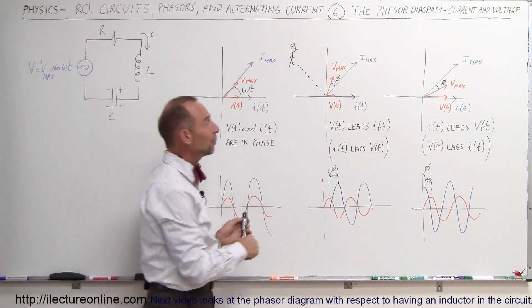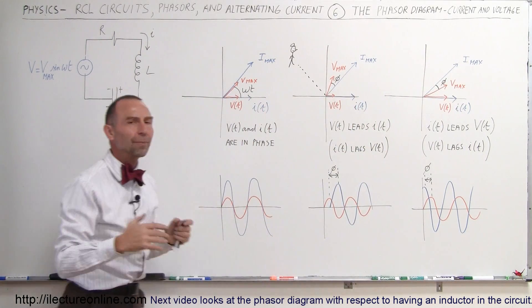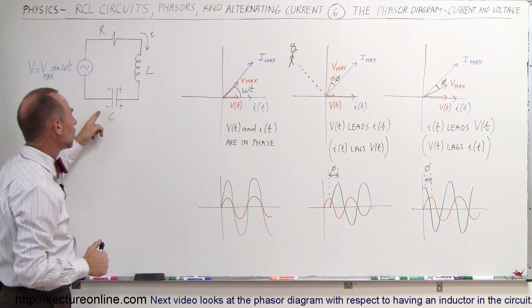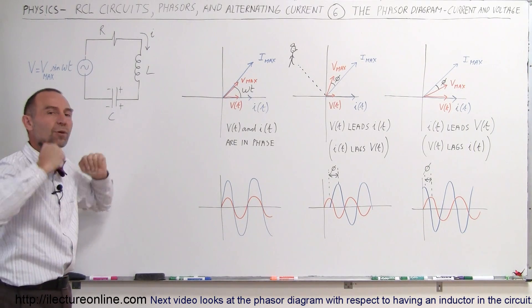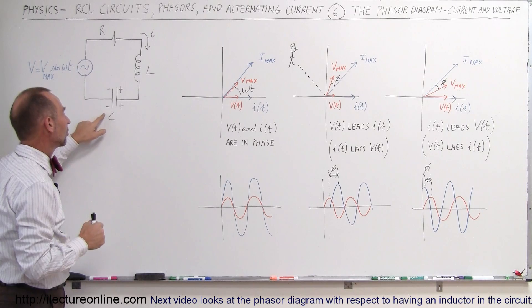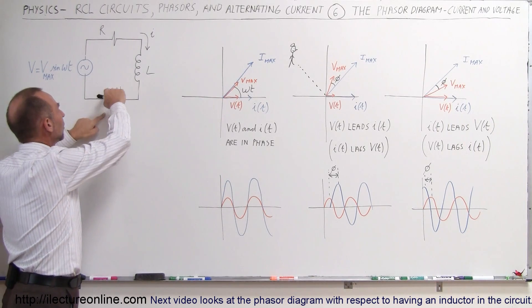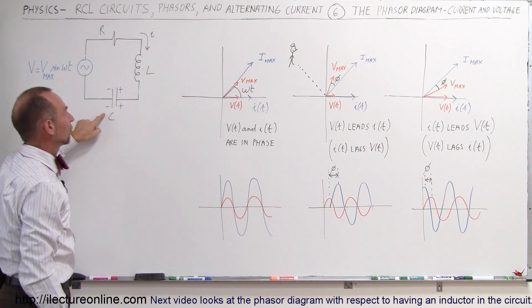On the other hand, if we see that the current leads the voltage, that means the capacitor plays a predominant role in the circuit because the capacitor allows the current to flow before the voltage builds up across the capacitor. And so you can see then that in the third case, we have a capacitor-dominated circuit.